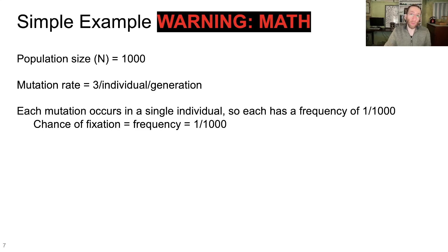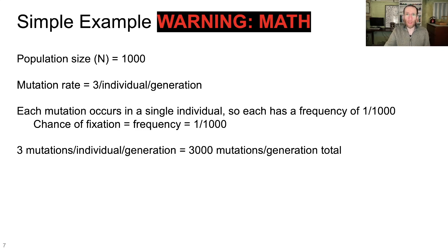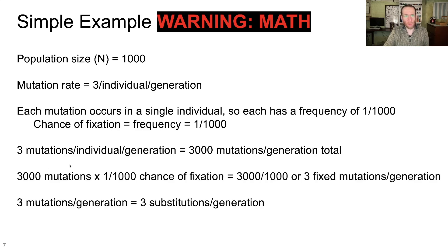Each mutation, when it occurs, has a frequency of 1 in 1,000, which means the chance of fixation is equal to that frequency. The chance of fixation is 1 in 1,000 because we're dealing with a population that's just operating under genetic drift. So within a single generation, we have three mutations per individual per generation. We have 1,000 individuals. So we have 3,000 mutations per generation total. So let's multiply a little bit. We'll take our 3,000 mutations. We will multiply that number by a 1 in 1,000 chance of fixation to reach 3,000 over 1,000, or to simplify that, three fixed mutations per generation.